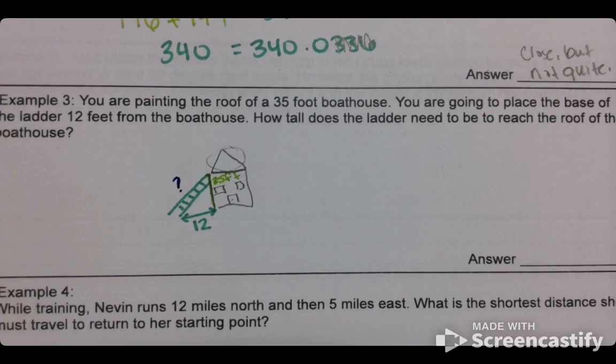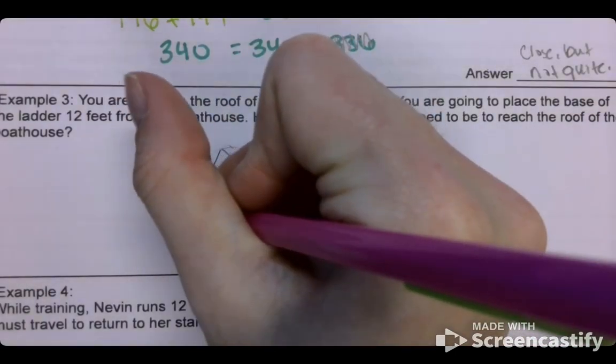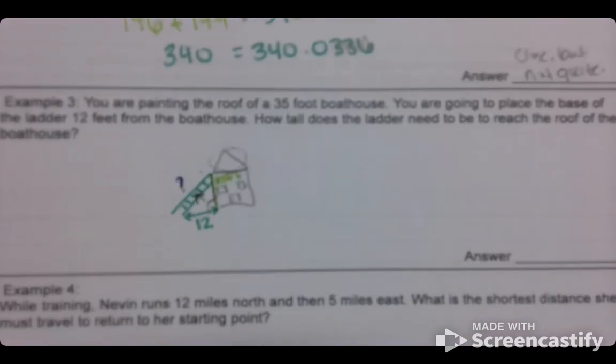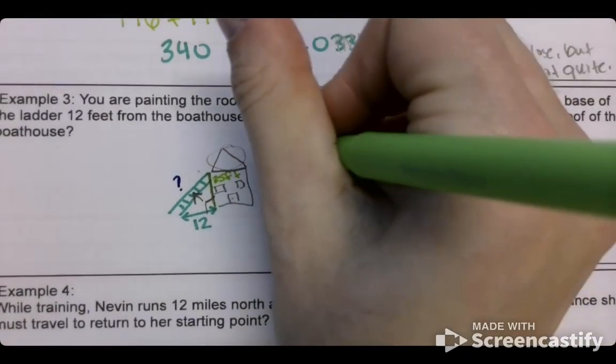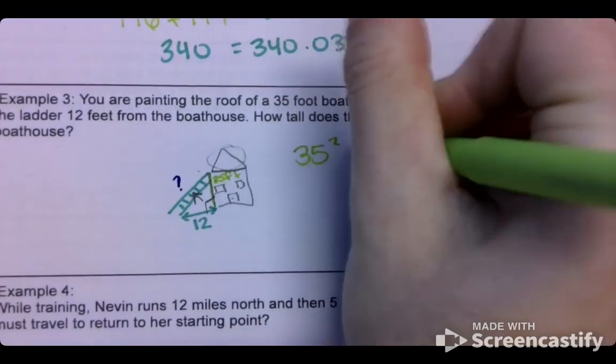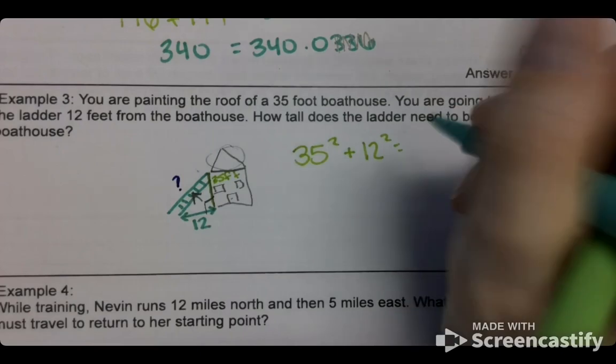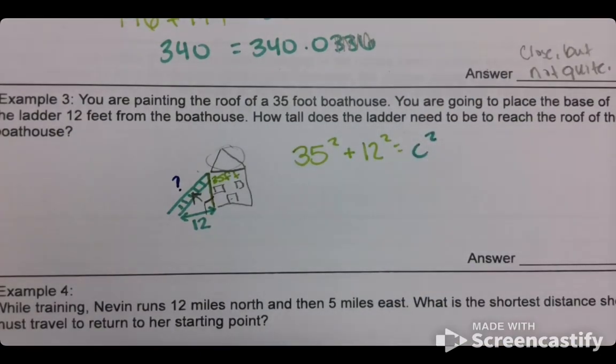So this again is that real world Pythagorean theorem. So where is your right angle? It is here. So if I go across, my ladder is my C. So we should have 35 squared plus 12 squared and then we're going to equal that to C squared. We're going to try to figure that out.